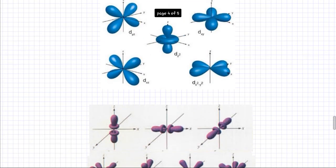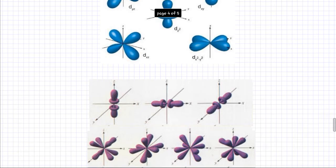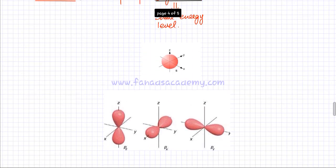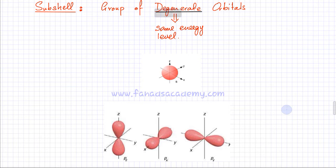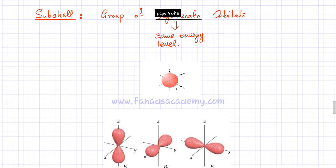Then you had F orbitals. For A-level chemistry, you don't really need to know the shape of F orbitals, but there are seven different types. Each orbital can contain a maximum of two electrons. So a subshell is when you group different orbitals together based on similarity of energy levels — if they have exactly the same energy level.